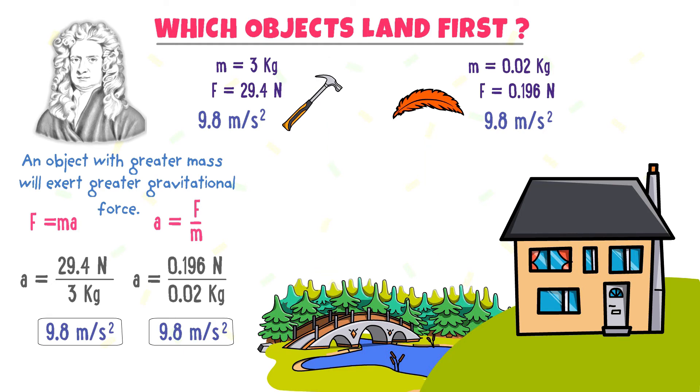But it is not possible in real life. Well, it is because of the air resistance. If we neglect the air resistance, both the hammer and the feather will land at the same time. Therefore, we say that in the absence of air resistance, they both land at the same time.